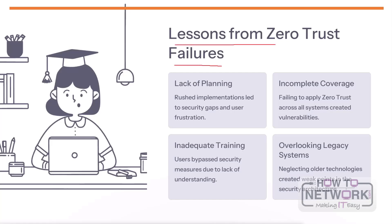Looking at lessons from zero-trust failures, many organizations have struggled with implementation. Common pitfalls include: lack of planning, where rushed rollouts without proper planning leave security gaps and frustrate users. Applying zero-trust inconsistently without full coverage across all systems creates vulnerabilities that undermine the entire approach. Inadequate training for employees on how zero-trust works means they may find ways to bypass security measures. Legacy systems not properly integrated into the zero-trust architecture can become weak points that attackers can exploit.